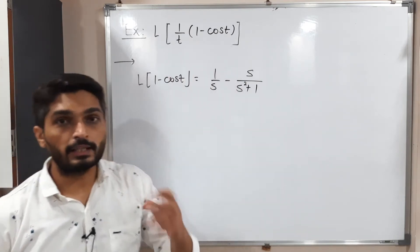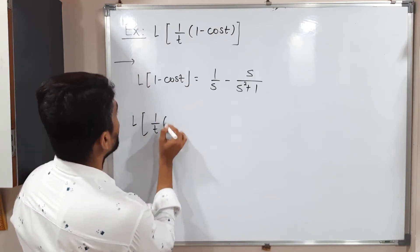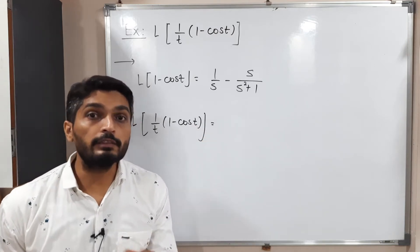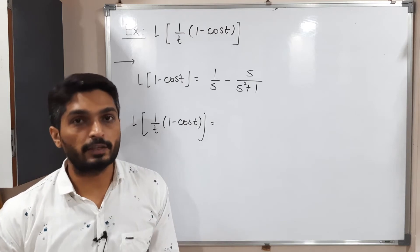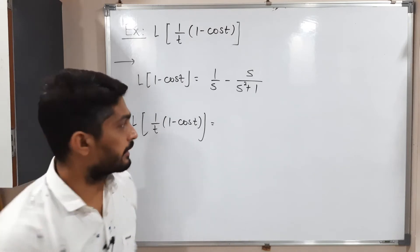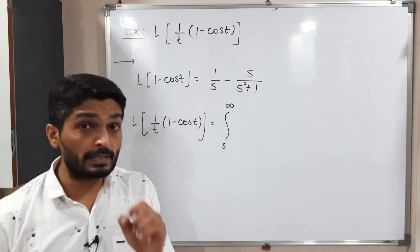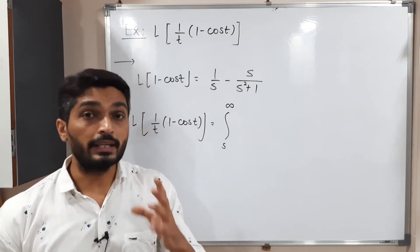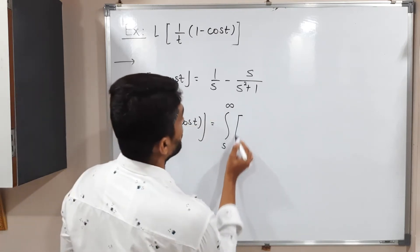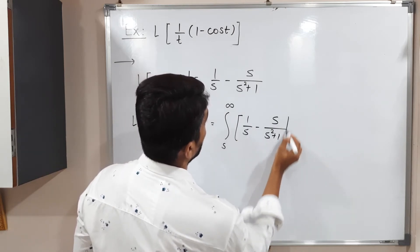So we got the Laplace of this bracket. Now consider Laplace of one by T into one minus cos T. We are going to use the effect of division by T. In case of division by T, we simply take integration from S to infinity. The limits are fixed: S to infinity. We integrate the Laplace of the neighboring function, which we already have: one by S minus S upon S squared plus one, ds.